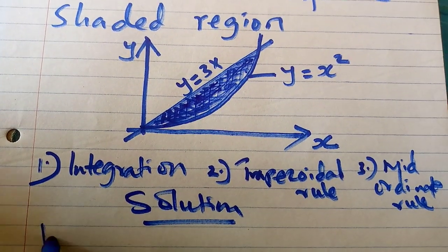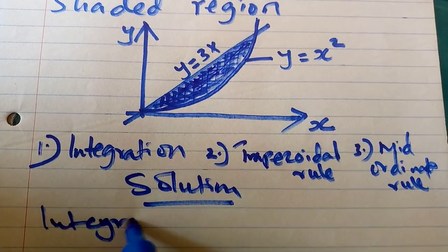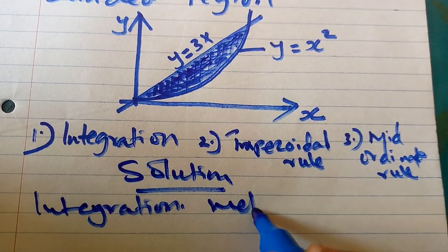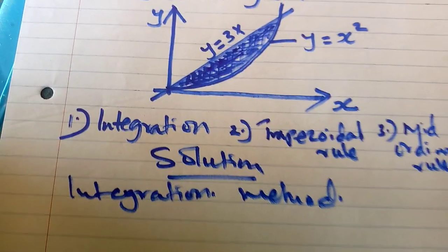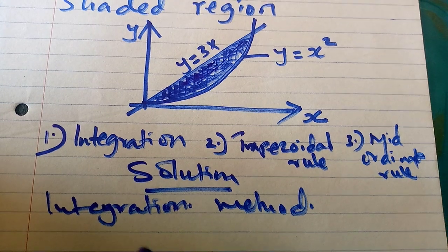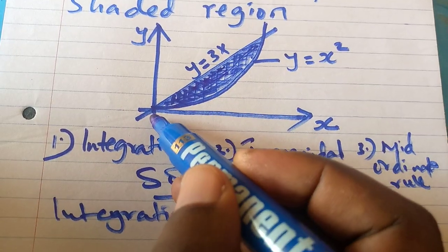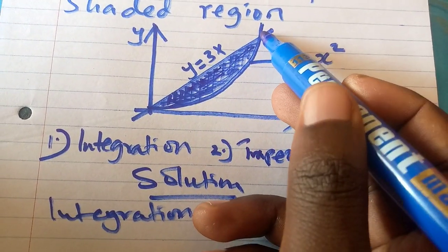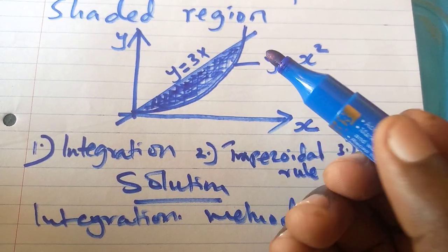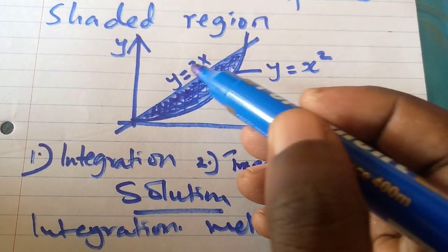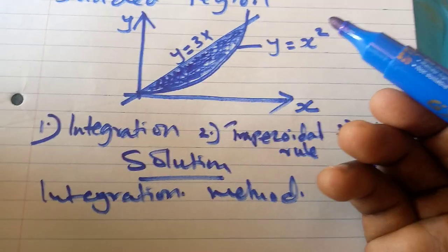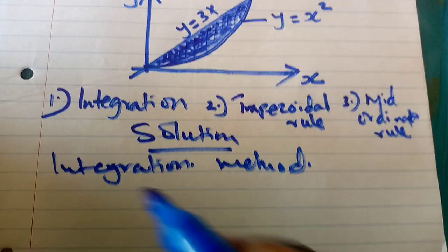The integration method. First thing, I'll be required to find the limits at which this shaded region lies. Remember, you have two equations: we have y equals 3x and we have y equals x squared.